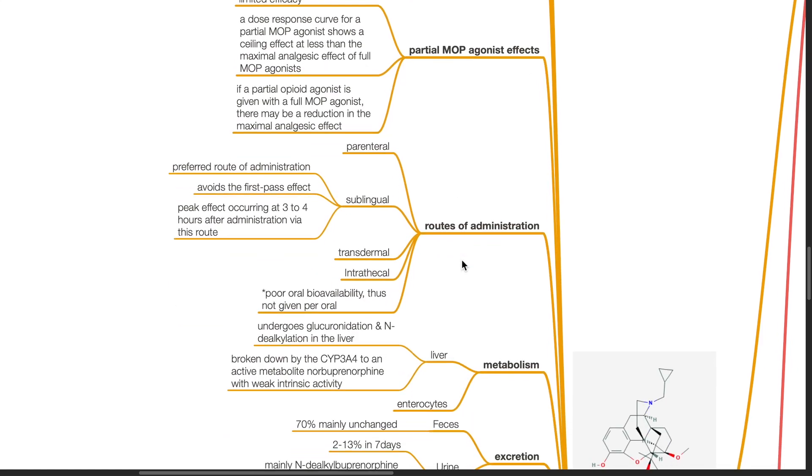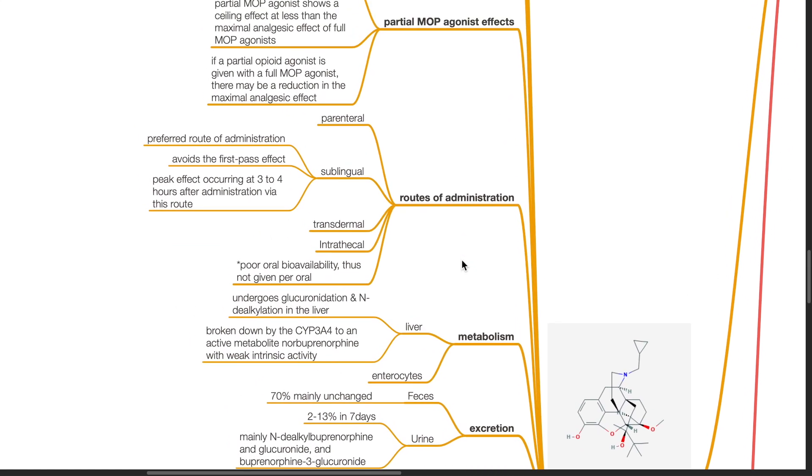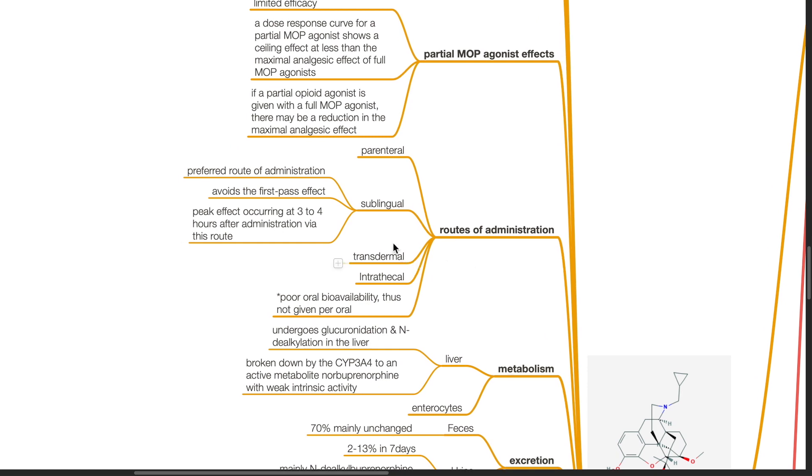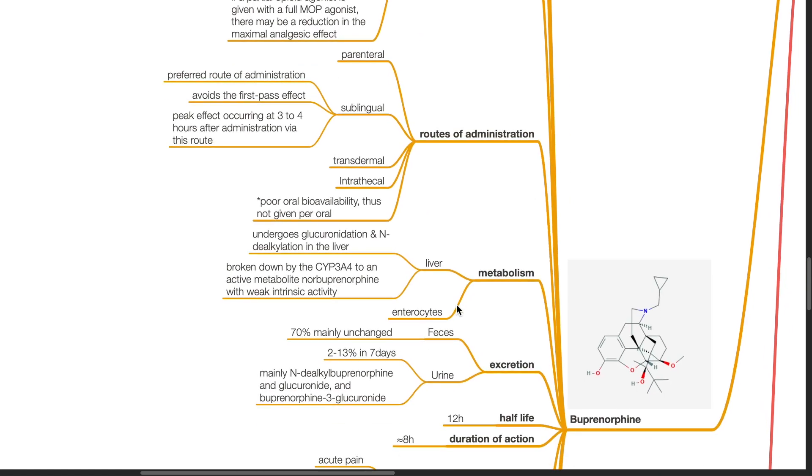Routes of administration of buprenorphine: parenteral, sublingual, transdermal, and intrathecal. Buprenorphine has poor oral bioavailability and thus it is not given orally. Sublingual is the preferred route of administration. It avoids first-pass effect. Peak effect occurs at 3 to 4 hours after administration via this route.